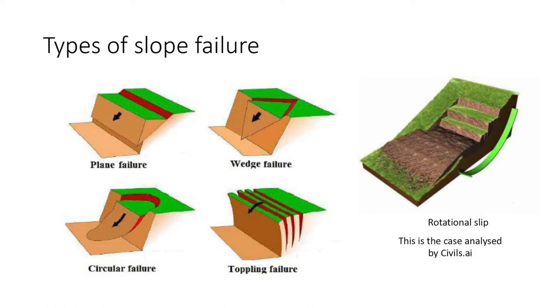Circular failure follows a similar principle to wedge failure. Toppling failure occurs when columns of rock formed by steep discontinuities rotate about a fixed point at or near the base of the slope, followed by slip between the layers.